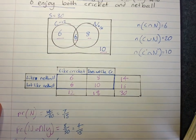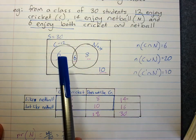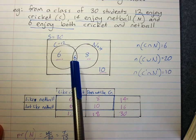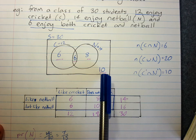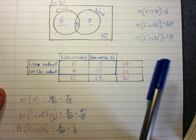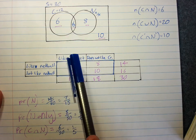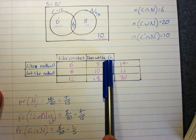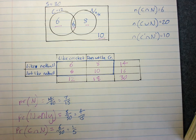To summarise: remember which numbers are totals. Remember that the four zones are cricket only, likes both, netball only, and likes neither. A two-way table has a little more information than a Venn diagram — it includes the event and its complement: likes cricket and does not like cricket, likes netball and does not like netball.